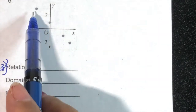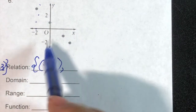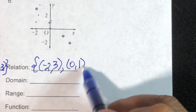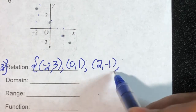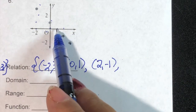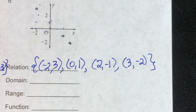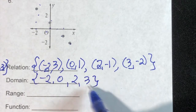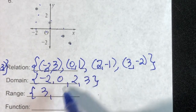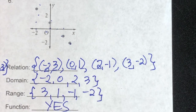Let's take this point: negative two, three. How about this point? Zero, one. How about this point? Two, negative one. And lastly, this point is three, negative two. So the domain is: negative two, zero, two, and three. The range is: three, one, negative one, and negative two. This is a function because no value of x is repeated.